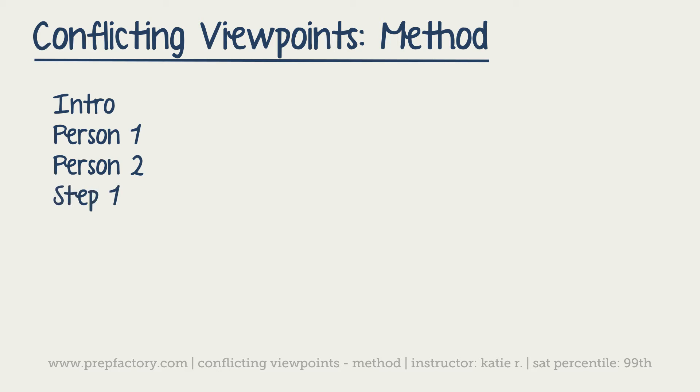So the big point with conflicting viewpoints is that you want to keep straight which person has which opinion, and that is partially notes, but it's also the order in which you do things. So, step one is read the intro, and you're also going to take notes on it and whatnot, but we'll go over that in a second. So, step one, read intro and person one. Step two is unlike what most people like to do, you're not going to read person two, you're going to ignore them for a second. You are going to do person one questions. And you're going to know that they're person one questions because you're going to kind of skim them, and if you see the number one and not the number two, then that's probably a person one.